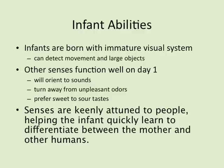Infants are born with an immature visual system. They can detect movement in large objects but can't yet decipher facial features. Other senses, however, function well from day one: they can hear well, turn away from unpleasant odors, and prefer sweet to sour tastes. The senses are keenly attuned to people, helping an infant quickly learn to differentiate between the mother and other humans.